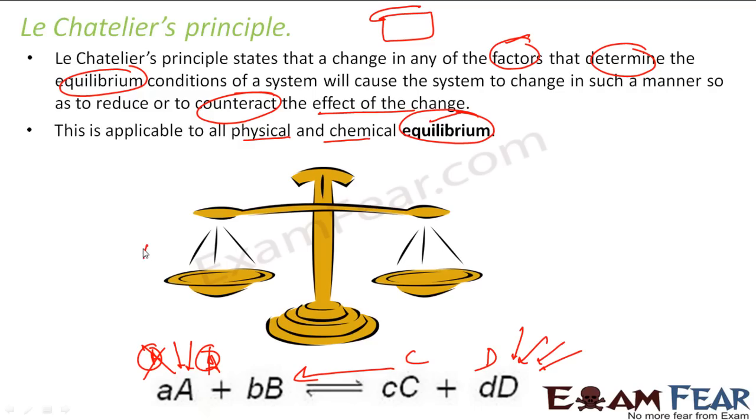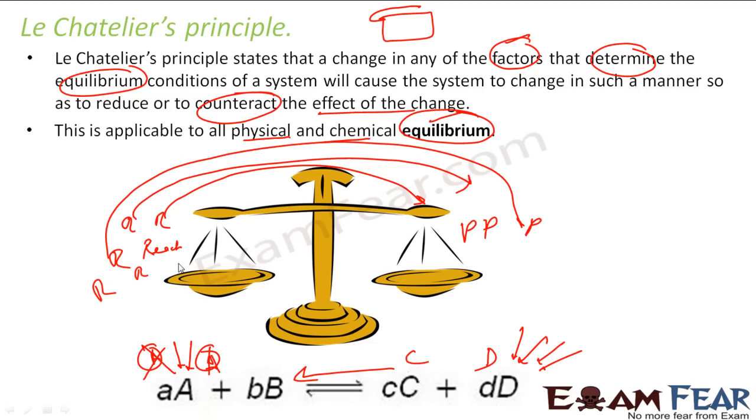Like, for example, if you add more reactant here, what will happen is according to Le Chatelier's Principle, this reactant will react, some of this reactant will react and form product. Some, not all. If you add, let's suppose, five or six reactants, out of that three reactants will go and form product and three will remain. So there are three more reactants, three more products. The system is balanced.